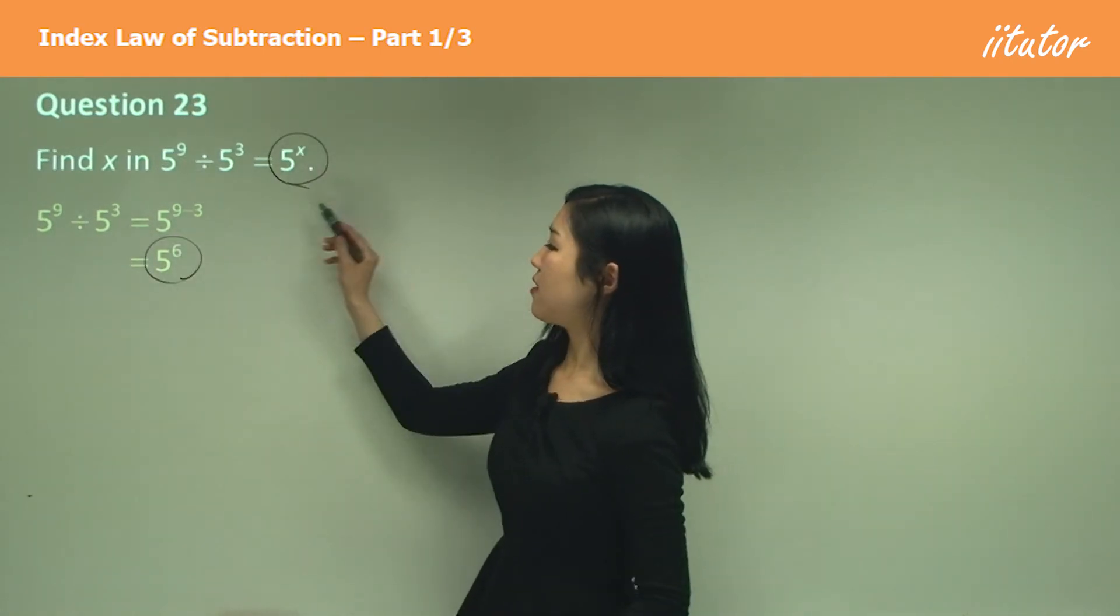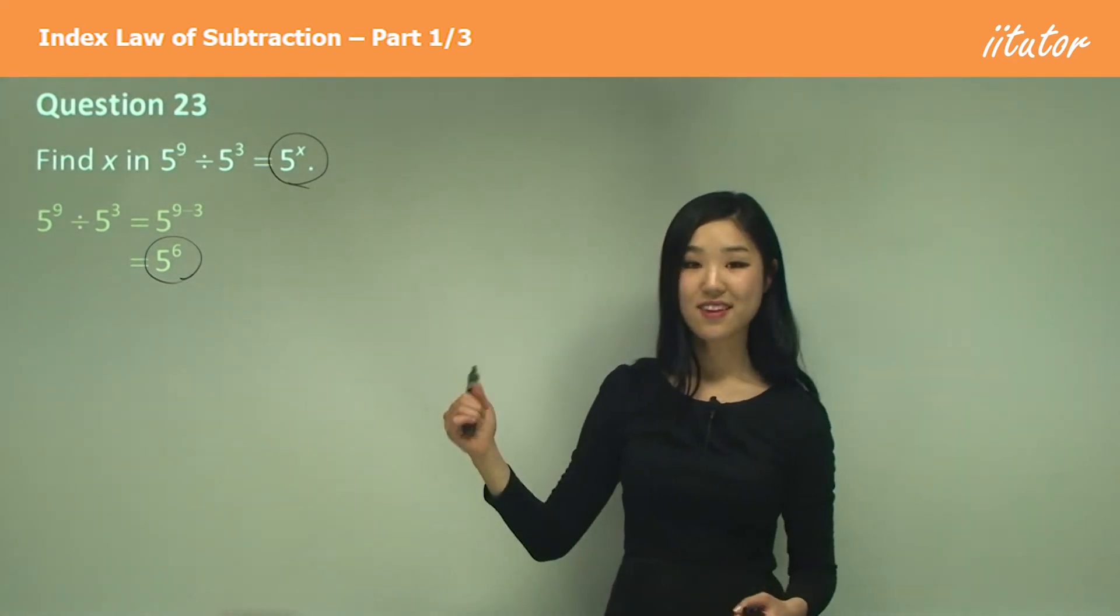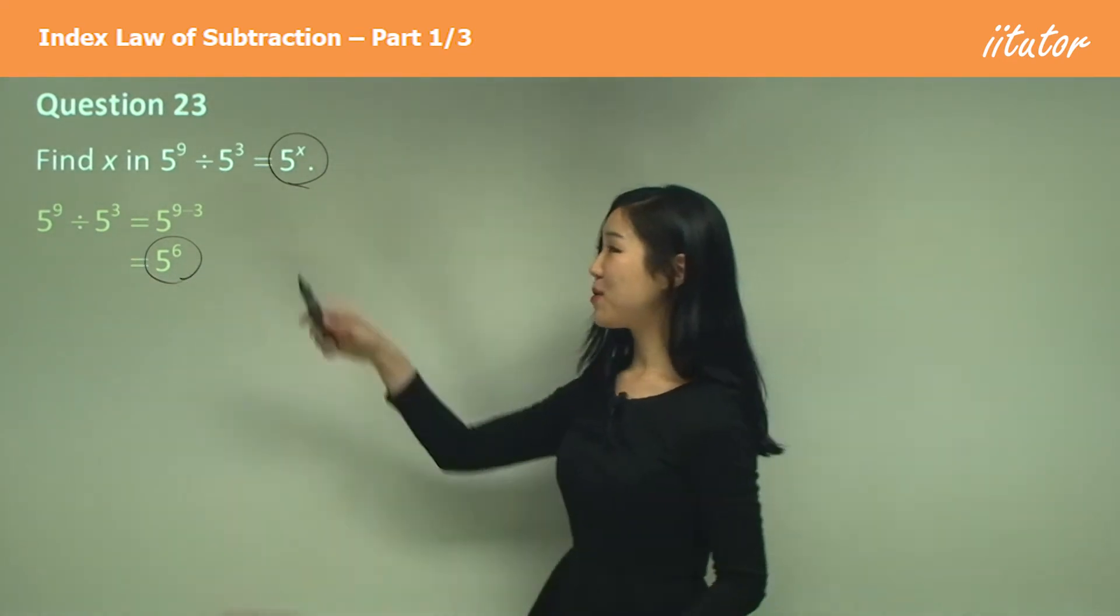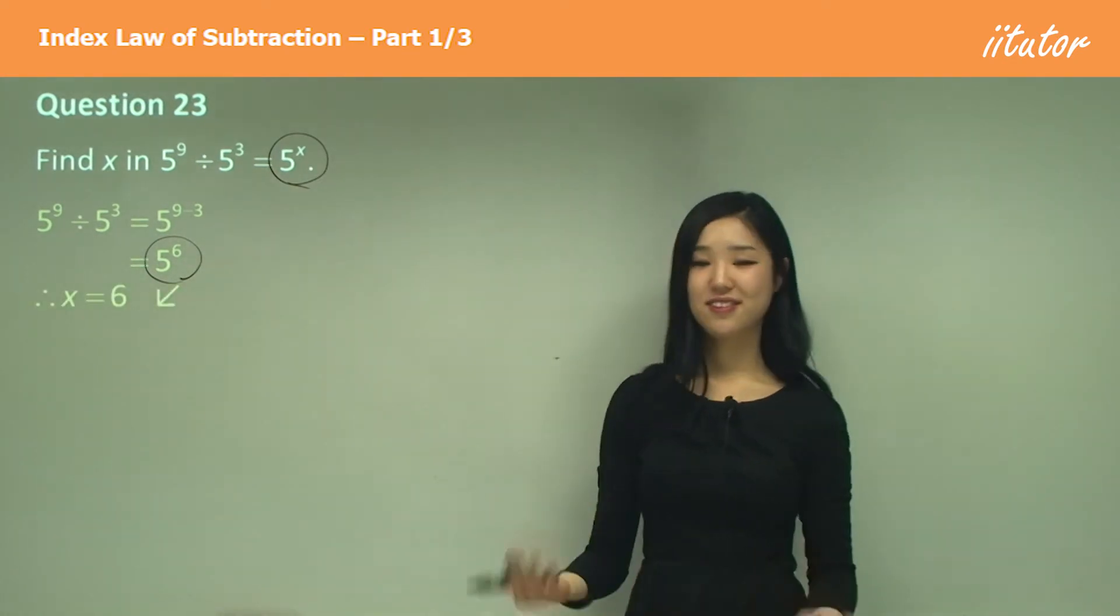This must be equal to this. The base is the same, 5. So therefore the indices must also be the same. What's x going to be? It must be equal to this, so x equals 6.